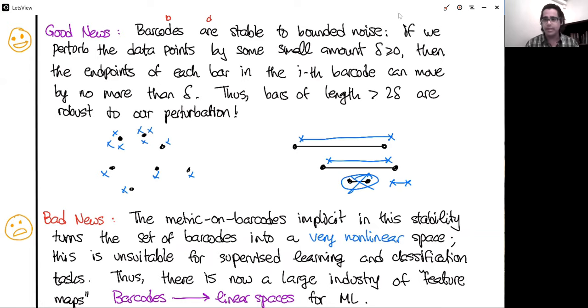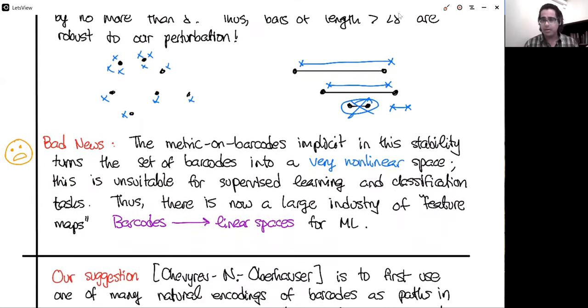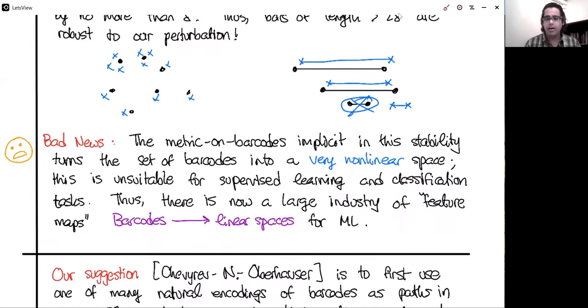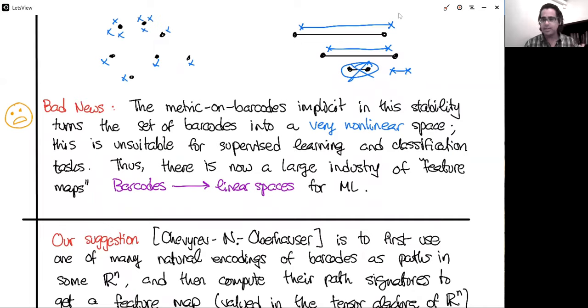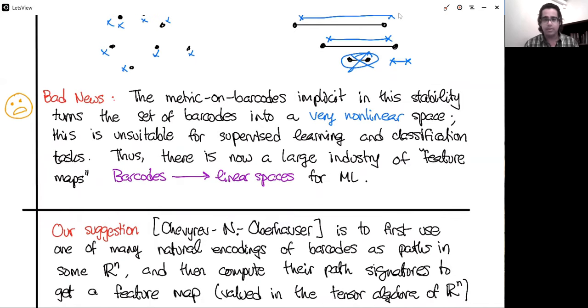The bad news is that the metric on barcodes, which makes the stability theorem true, turns a set of all barcodes into a hideously nonlinear metric space. What that means is it's terrible for things like machine learning. You don't get any vectors or anything like that. There's no linear structure on barcode space. So there is now a huge industry of people trying to develop intelligent feature maps for barcodes, great performance, lots of different bright ideas everywhere. And the paper that I'm describing, this is the joint work with Ilya and Herald, our idea was to encode barcodes as paths and then use the path signature, which since you are in this session, you know all about now. And then you can use the path signatures to generate a very nice feature map taking values in the tensor algebra of some ℝⁿ and use that for machine learning. In our paper, we outline three or four different ways of encoding these nice finite barcodes as paths.